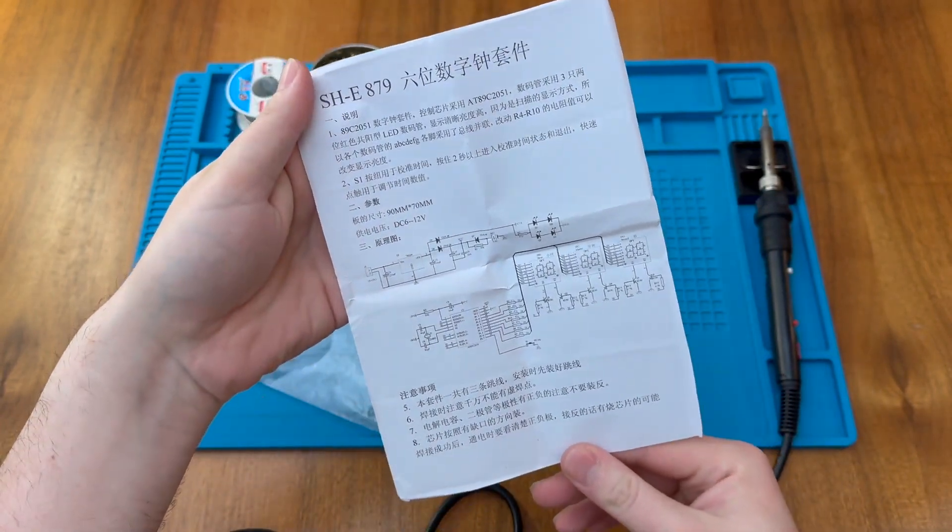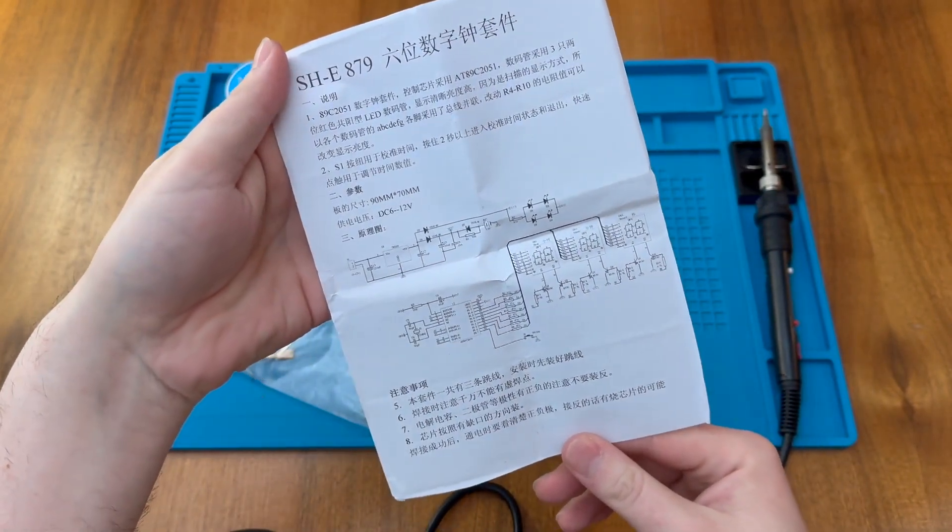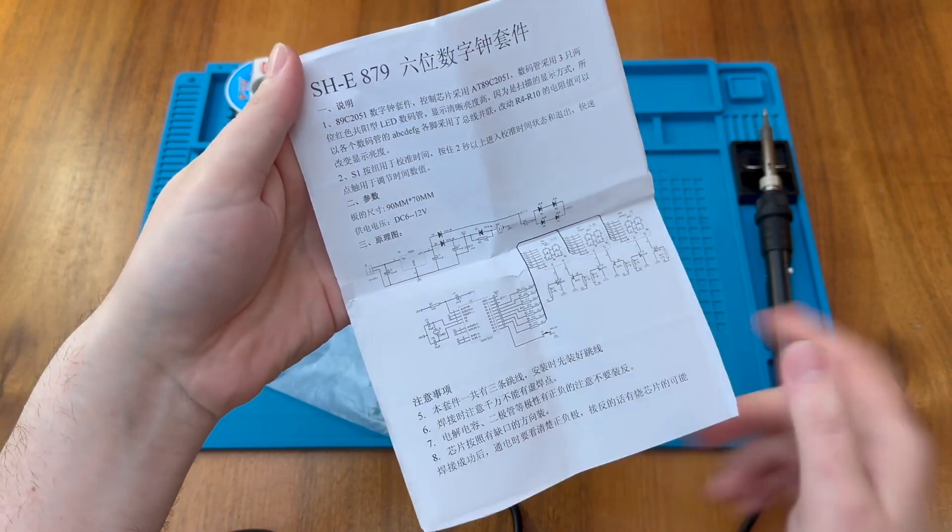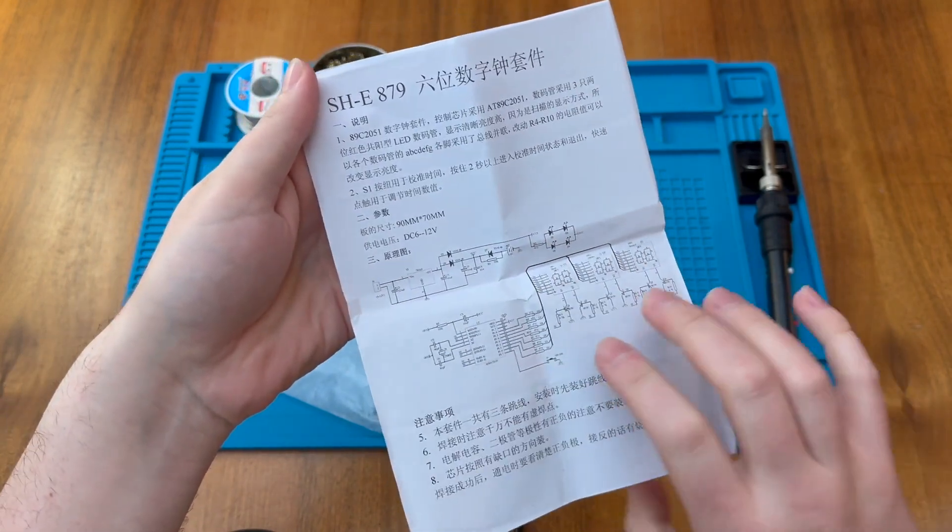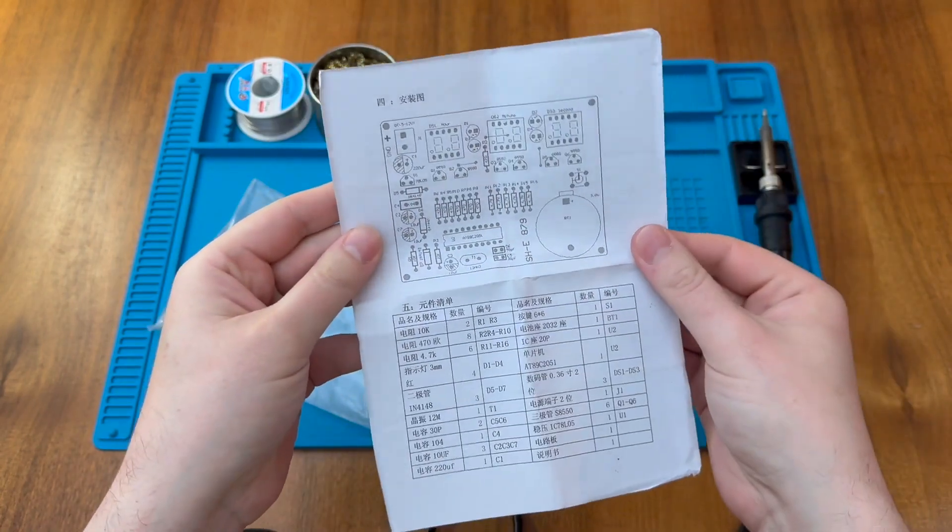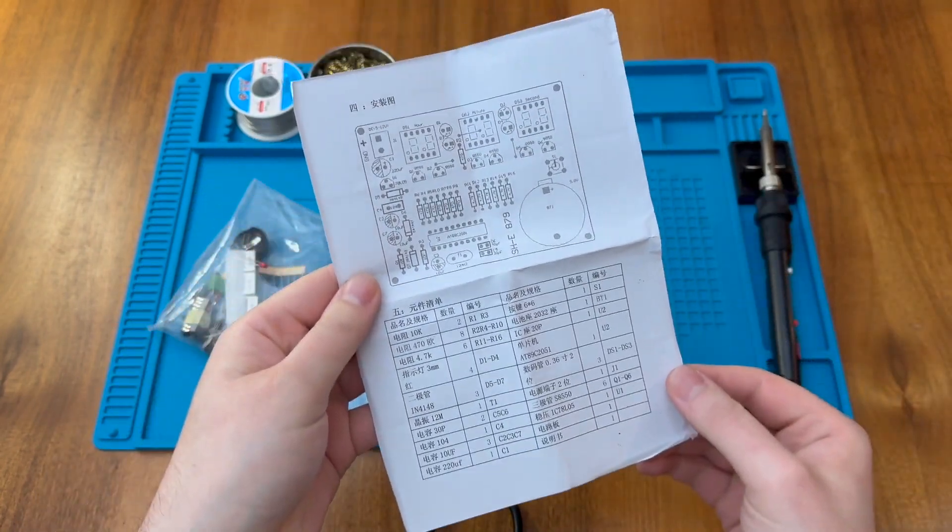As usual, I can't read what's going on here. There is a schematic diagram though, so that might be useful. It says the clock runs from 6 to 12 volts DC. And here's the PCB layout and list of components.